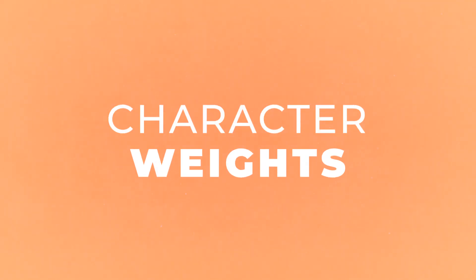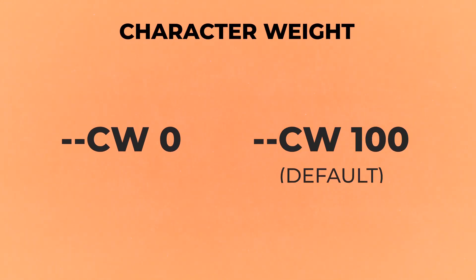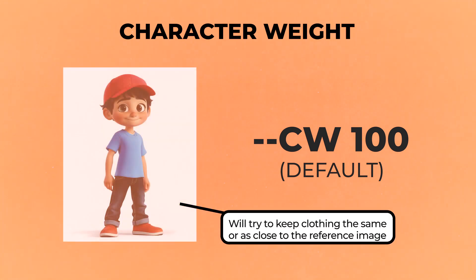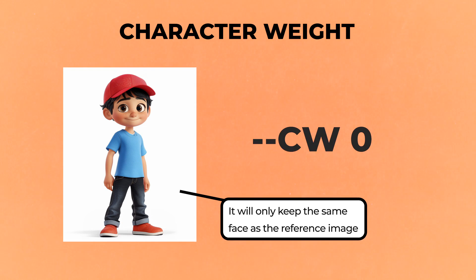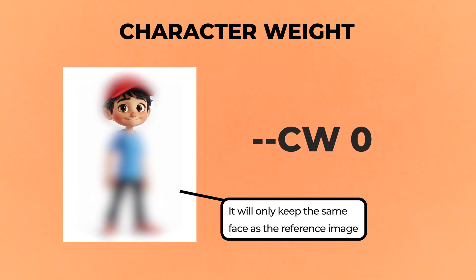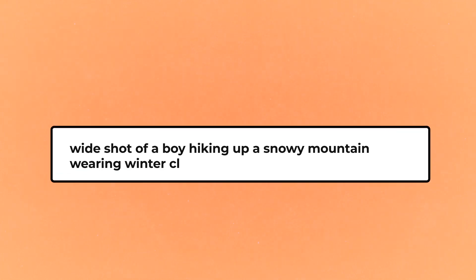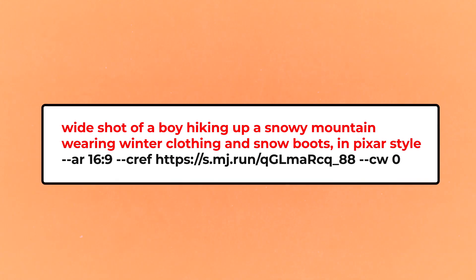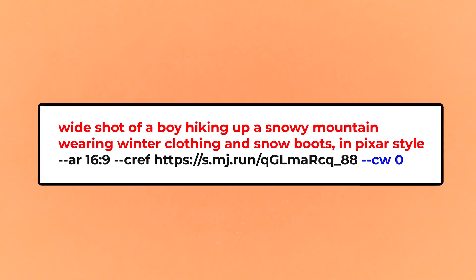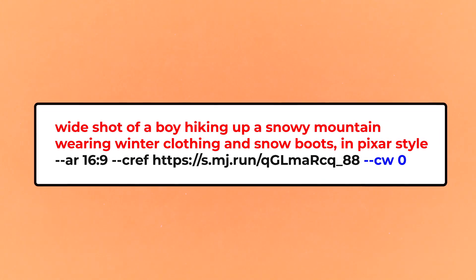Now let's have a look at character weights. Character weight ranges from 0 to 100. With character weight set at 100, which is the default, your character will remain mostly the same. Whereas if you go down to character weight 0, it will only keep the face the same, so you can change clothing and other aspects. Let's have a look at putting this character in different scenarios with different clothing — I've gone for a wide shot of a boy hiking up a snowy mountain, wearing winter clothing and snow boots, with a character weight of 0.